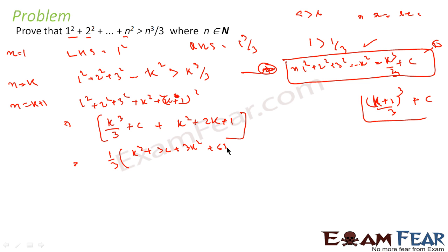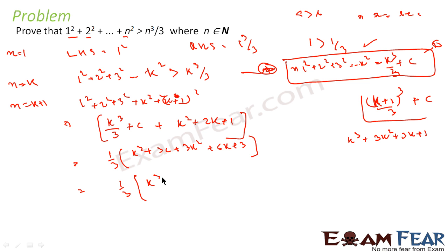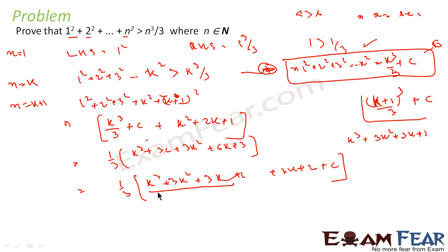Taking 1 by 3 common, we get k cubed plus 3c plus 3k squared plus 6k plus 3. We know that (k plus 1) cubed equals k cubed plus 3k squared plus 3k plus 1. So we write 1 by 3 times (k cubed plus 3k squared plus 3k plus 1) and group the remaining terms as a constant.